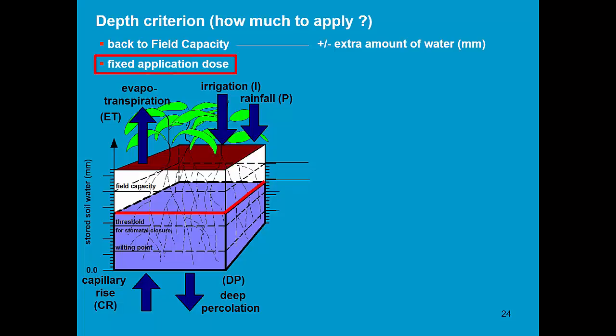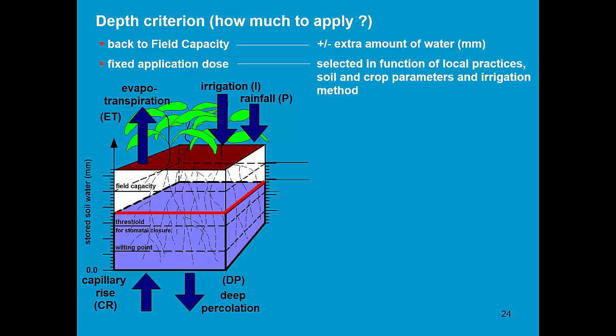The other depth criteria is a fixed application dose. That dose is selected in function of local practices, soil and crop parameters, and the irrigation method.